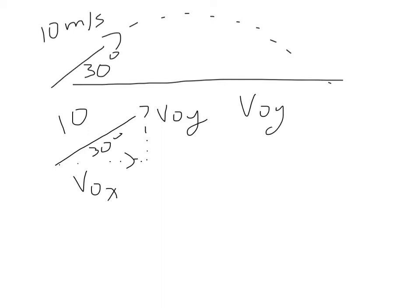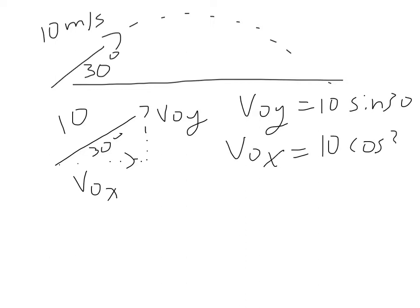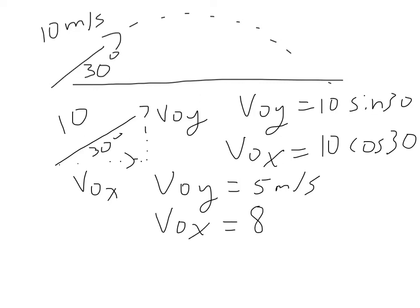v0y is going to be equal to 10 multiplied by the sine of 30, and v0x is equal to 10 multiplied by the cosine of 30. Make sure to review your trig if you're having some trouble figuring that out. v0y is therefore going to be equal to 5 meters per second, and v0x is going to be equal to 8.66 meters per second.